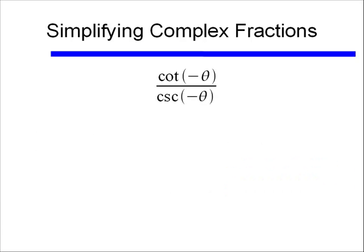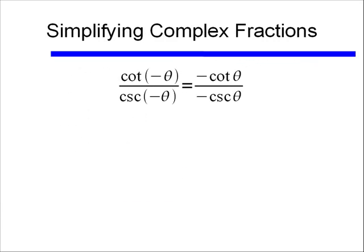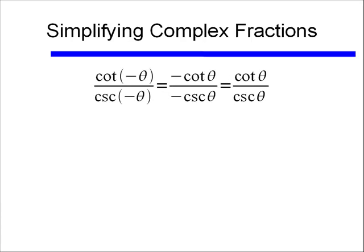Why have I bothered with this? Let's look at something such as cotangent of negative theta divided by cosecant of negative theta. Before converting these to sines and cosines, I want to take care of that negation sign. Going back to my even-odd functions, cotangent of a negative angle is equal to negative cotangent of the positive angle. Likewise, cosecant of negative x equals negative cosecant of positive x. So I rewrite cotangent of negative theta as negative cotangent of theta, and cosecant of negative theta as negative cosecant theta. Then I divide the negative 1 out of numerator and denominator, and I end up with cotangent theta over cosecant theta.